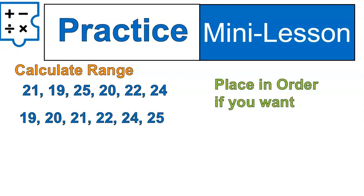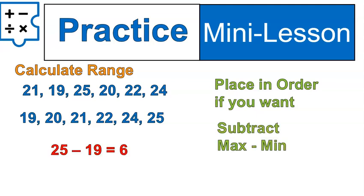Did you place them in order? You don't have to, but maybe you did. Then we subtract, in this case, 25 minus 19, which gives us 6. We have a range of 6.